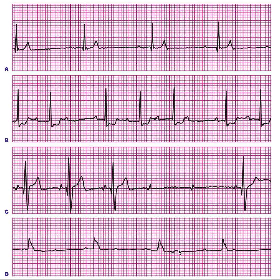So these are the types: first degree, second degree Mobitz Type 1, second degree Mobitz Type 2, and third degree. When interpreting EKGs, always think about underlying causes. For first degree, consider medications or underlying cardiac pathology. For second degree Mobitz Type 1, think about drugs like calcium channel blockers, beta blockers, or digoxin, and myocardial infarction.